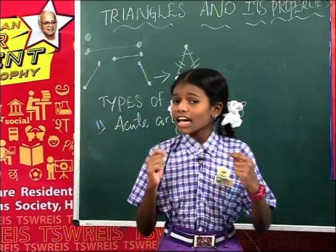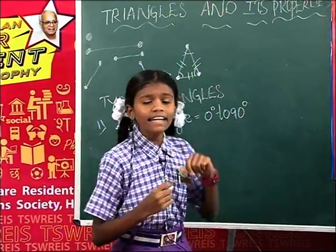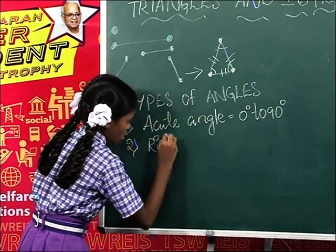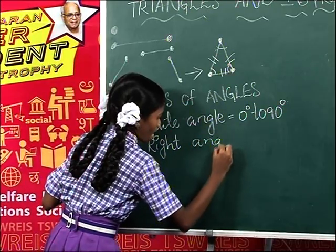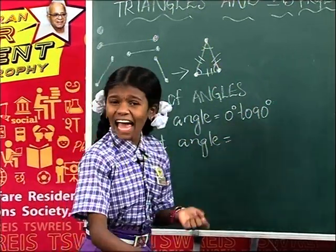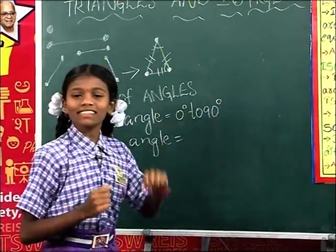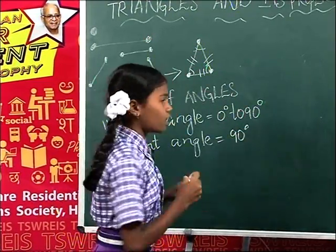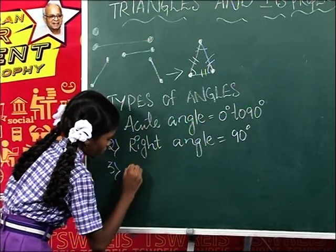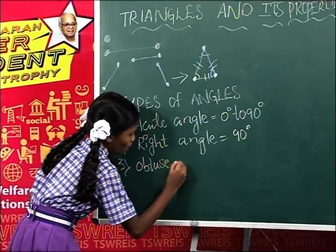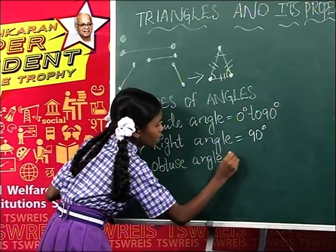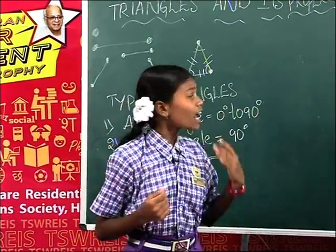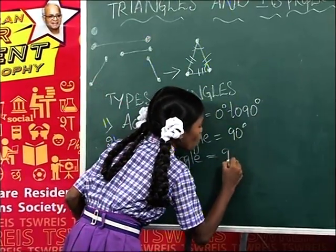If the angle is between 0 degrees and 90 degrees, it is called an acute angle. And right angle: if the angle is exactly 90 degrees, it is called a right angle. And obtuse angle: if the angle is between 90 degrees and 180 degrees, it is called an obtuse angle.